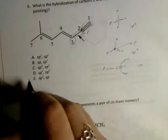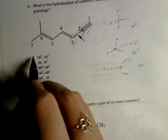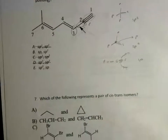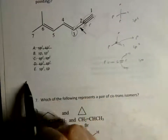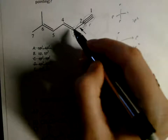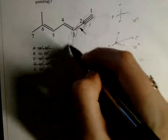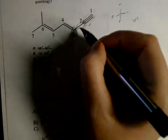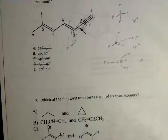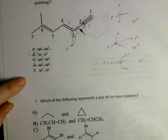Since one of these must be SP, we can eliminate answer choices that don't include SP, narrowing it to B or E. Now for carbon 3: it's bonded to 1, 2, and an implied hydrogen — so 3 things total — making it SP2. So the answer is choice B. E is wrong because it lists SP3.